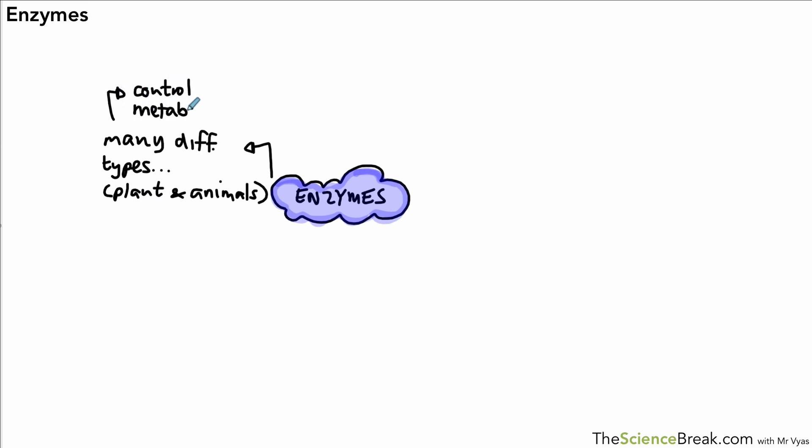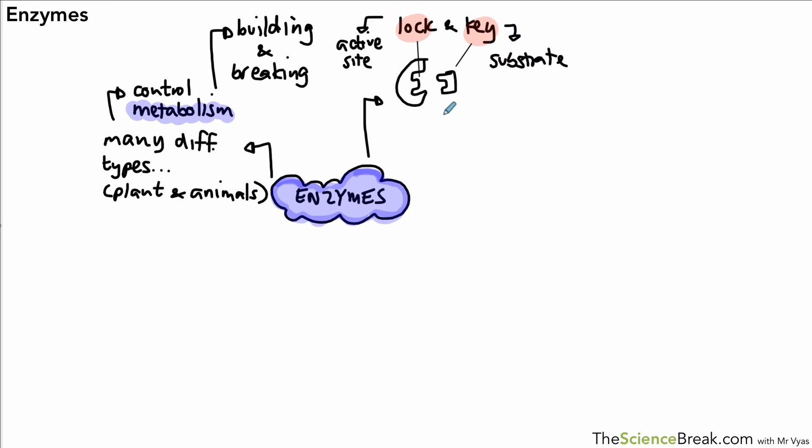They control metabolism, which we said was basically either building molecules or breaking them down. We talked about the lock and key model of enzymes where only one substrate will fit a particular enzyme, because the substrate is like a key where the active site is like a lock. So enzymes are very specific to one type of substrate. Once that happens we have a product that's made.